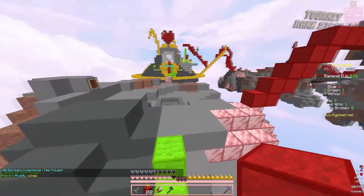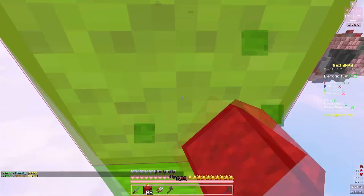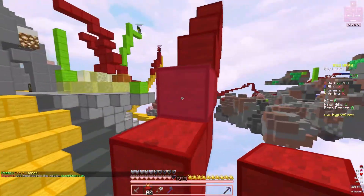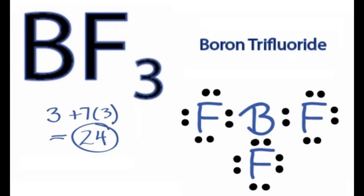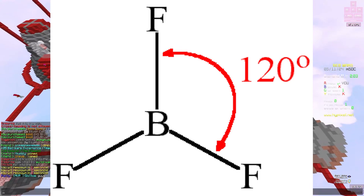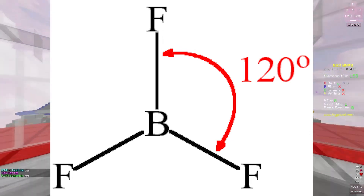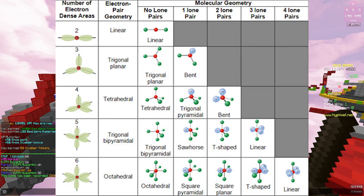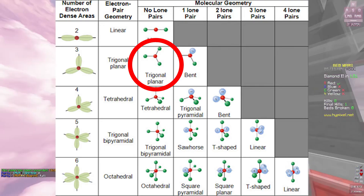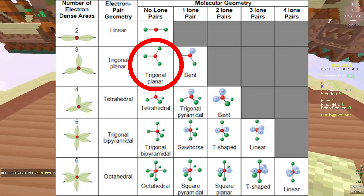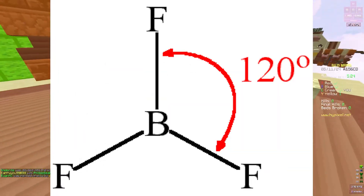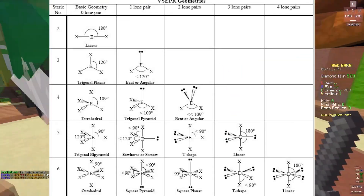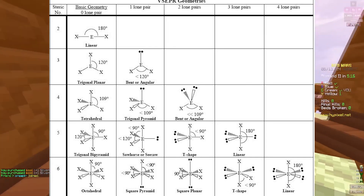The shape of BF₃ is trigonal planar because it's AX₃E₀ — no lone pairs. Looking at the cheat sheet, AX₃E₀ with no lone pairs means no lone pairs are affecting the 3D space, so both electron pair geometry and molecular geometry of BF₃ are trigonal planar. Three atoms surround the central atom, and the bond angles are 120 degrees.